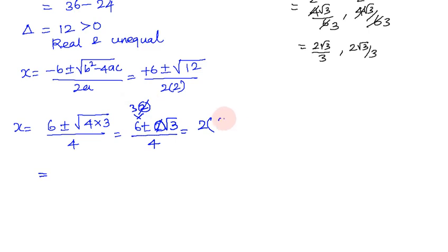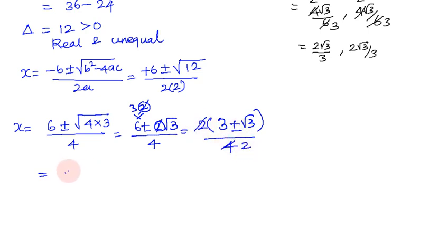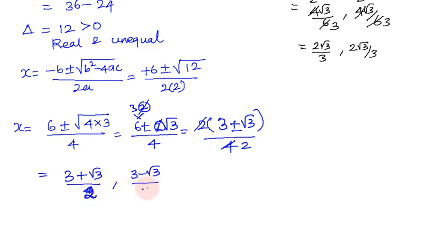Simplifying: x = (6 + 2√3) / 4 and x = (6 - 2√3) / 4. Dividing numerator and denominator by 2: x₁ = (3 + √3) / 2 and x₂ = (3 - √3) / 2. This completes the first problem set.